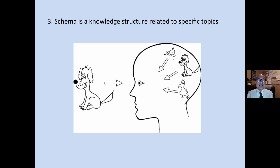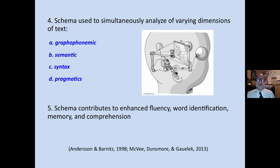A schema is a knowledge structure related to specific topics — it's like a file folder in our head. We use this to help us understand both what we read and what we perceive. Schema is used to simultaneously analyze various dimensions of the text while we are reading — semantics, syntax, pragmatics, as well as graphophonemic information.